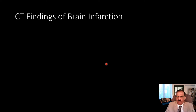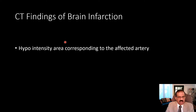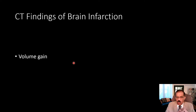Summing up CT findings of brain infarction: initially normal or subtle changes. The earliest change is loss of demarcation between gray matter and white matter. Slightly later, a hypo-intensity area corresponding to the affected artery territory appears. Later, once the ischemic brain undergoes necrosis, there is volume gain with compression of neighboring ventricles or shift of midline structure — though not to the extent seen with brain tumors.